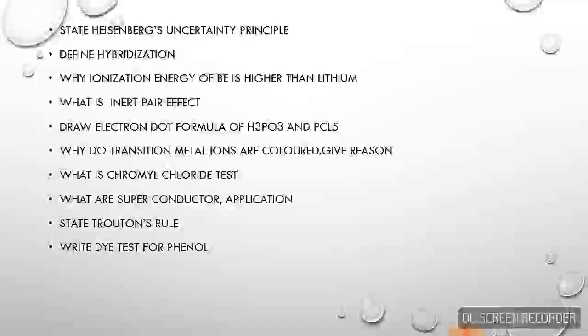Start. State Heisenberg's uncertainty principle. Define hybridization. Why ionization energy of Be is higher than lithium? What is inert pair effect? Draw electron dot formula for H3PO3 and PCl5.